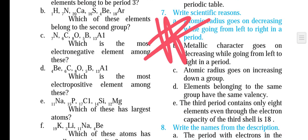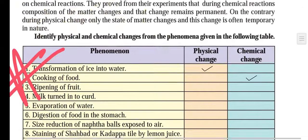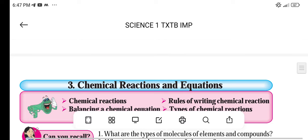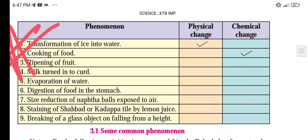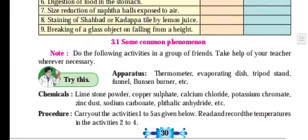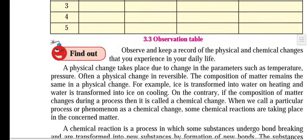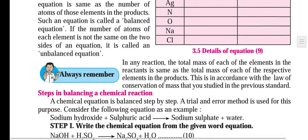On page number 29 we have a scientific reason: atomic radius goes on decreasing while going from left to right in a period. Please mark this — it's important. When I move on to the new chapter called Chemical Reactions and Equations, for physical change and chemical change you have to identify them. How easy it is — if you have 3 marks you definitely need to revise it. That gets you 3 marks.